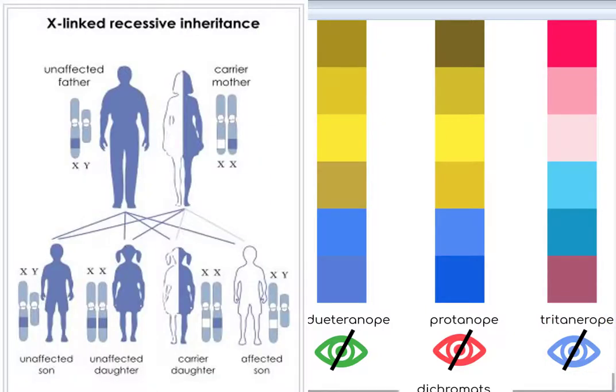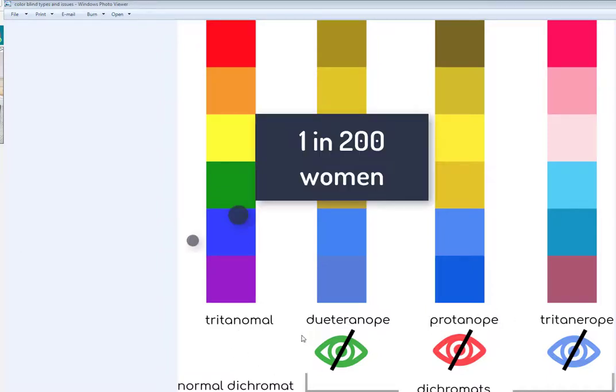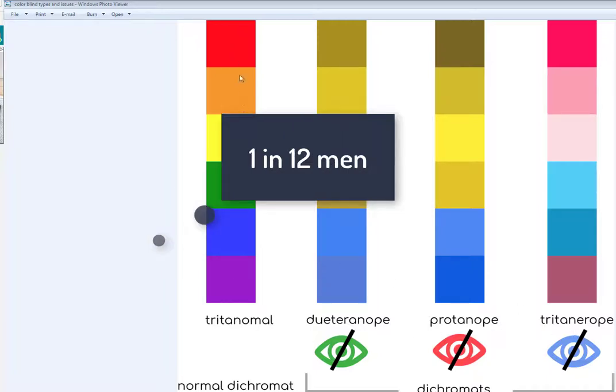When people have a genetic defect in their X chromosome, it can affect their ability to see color. The reason women have it better is because they have two X chromosomes and men only have one. So when they have the genetic defect, it's a higher rate in the population.